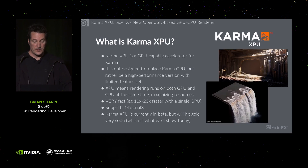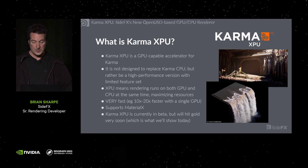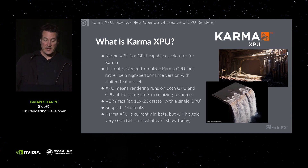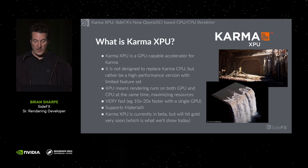And what is Karma XPU? Karma XPU is a GPU-capable accelerator for Karma. It's not designed to replace Karma CPU, but rather be a high-performance alternative with a slightly reduced feature set. XPU means that rendering can happen on GPU or CPU, producing identical results on each or both at the same time. It's multi-GPU-capable, meaning adding GPUs improves performance in a linear manner. Karma XPU is very fast — we're often seeing a 10 to 20x speed-up with a single GPU. It supports MaterialX for shading, and it's currently available in beta in Houdini 19.5, and will be releasing version 1 gold in Houdini 20 later this year.